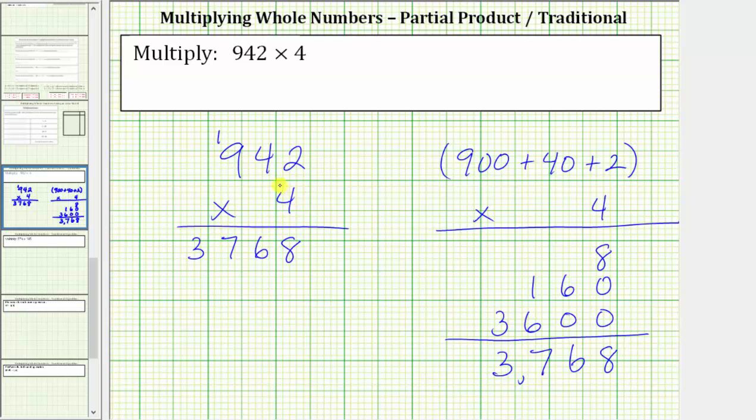And again, the reason we do this is because the four times nine is really four times 900, which we know is 3,600. And this one is really the one in the hundreds place value from 160, giving us 3,700, which is why we have a seven in the hundreds and a three in the thousands.